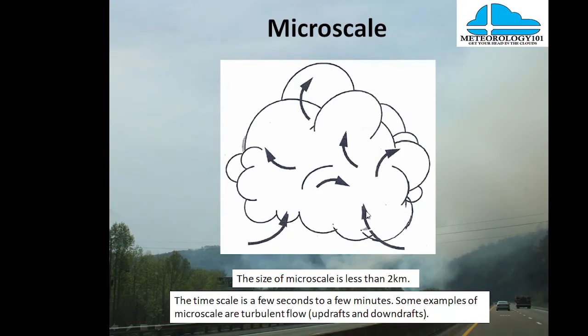The micro scale covers anything less than two kilometers, with a timescale of just a few seconds to a few minutes. Within a few seconds or minutes you can see a cloud growing or dissipating — it will be a different cloud in just a few minutes. Examples of the micro scale include turbulent flow, updrafts, and downdrafts.